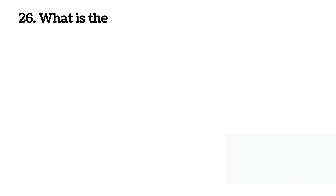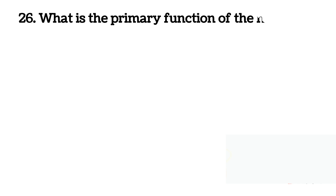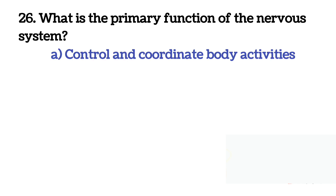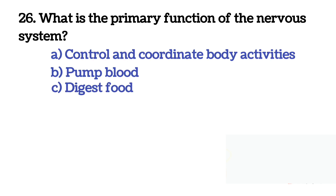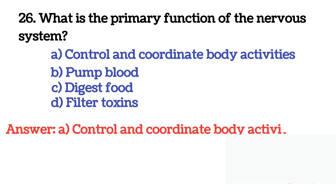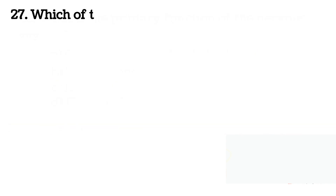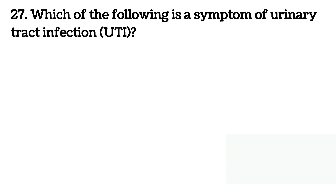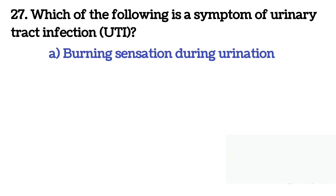Next question: What is the primary function of the nervous system? The correct answer is A. Next question: Which of the following is a symptom of urinary tract infection?